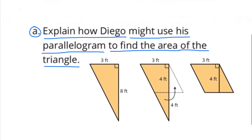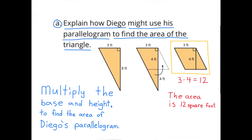Since Diego's parallelogram is made out of the same parts as the triangle, he can simply multiply the base times the height. 3 times 4 equals 12. The area of Diego's parallelogram is 12 square feet. And since the parallelogram is made out of the same parts as the triangle, the area of the triangle would also be 12 square feet.